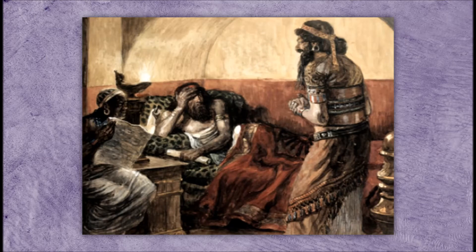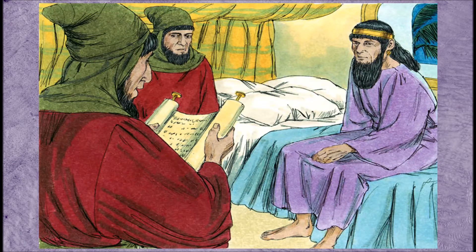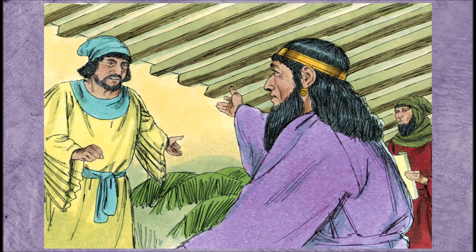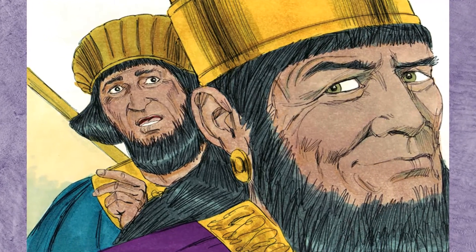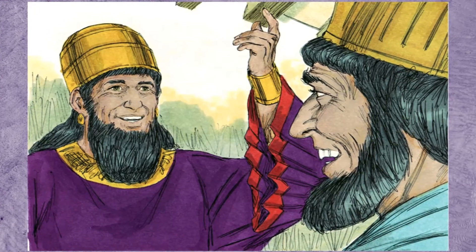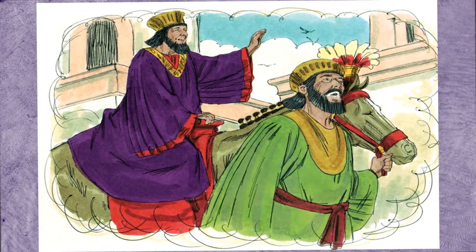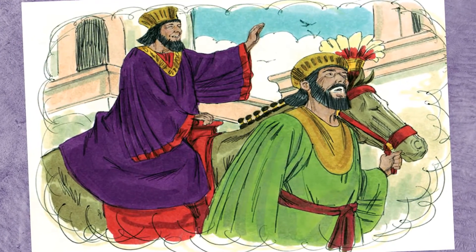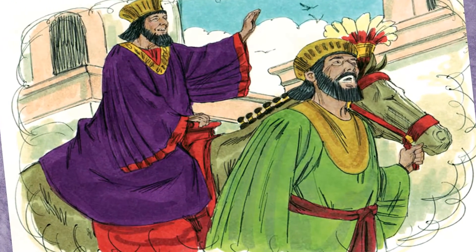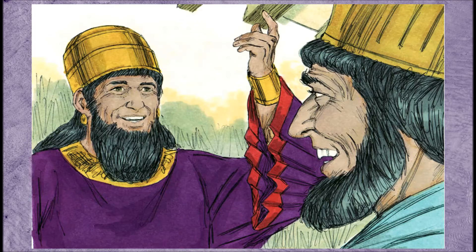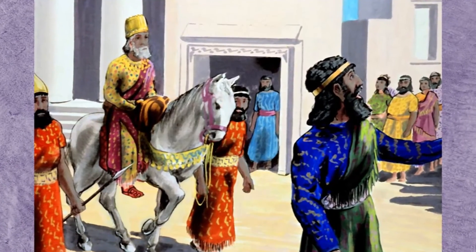Meanwhile, Xerxes is trying to fall asleep and is listening to the scribes read the royal records to him. They end up reading about the time Mordecai saved the king's life, and the king wonders why Mordecai was never rewarded for that. Xerxes notices Haman standing outside and sends him in, then asks him how to go about honoring somebody very special. Haman, being very vain, thinks the king is talking about him. He tells the king that this special person ought to be dressed in royal robes and given a crown, that a prince should put him on a royal horse and march him through the streets proclaiming, "This is how the king treats those who please him." Xerxes agrees and tells Haman to do all that for Mordecai, and chooses Haman himself to be the prince leading Mordecai's parade.